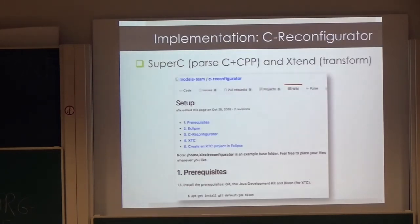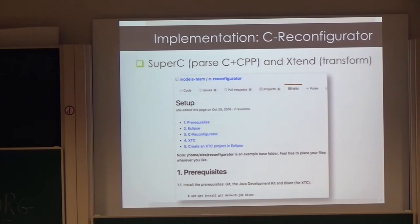We implemented this idea — rewriting variability — in a tool we call the C Reconfigurator, available on GitHub. You can set it up and use it; feel free to reach out or send messages with bugs. We use SuperC to parse the C code as well as the preprocessor directives, and we implement our transformations on top of that.